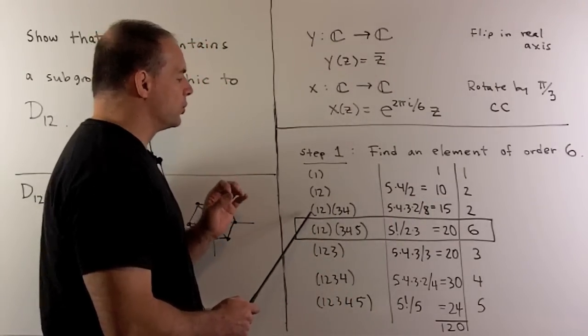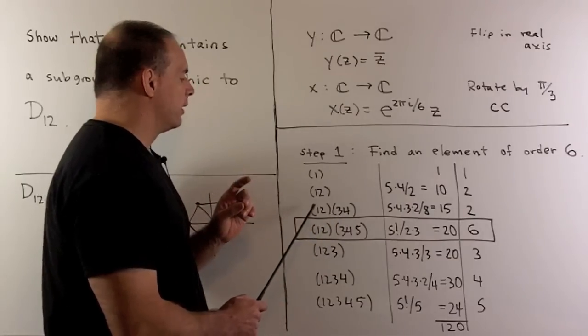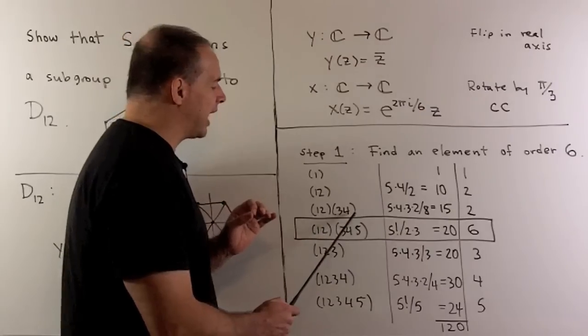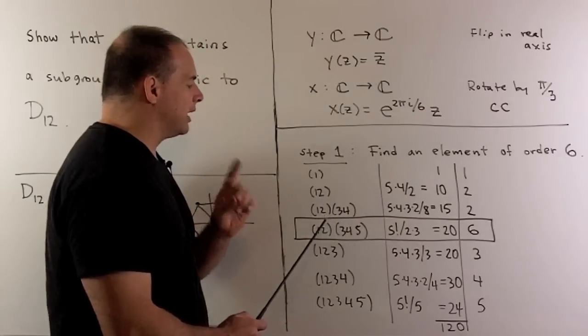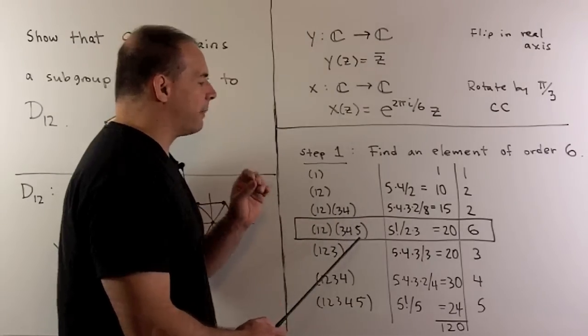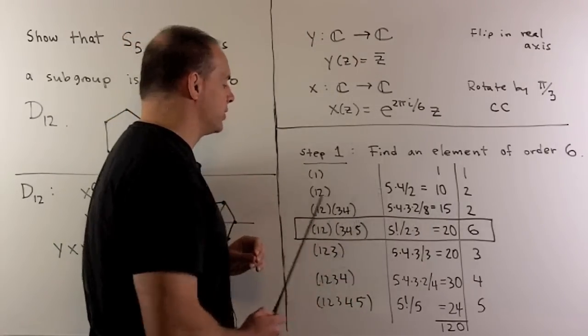For disjoint products of two cycles, we have 5, 4, 3, 2. I divide by two, divide by two again, and then we divide by two again because I can reverse the order of our two cycles. So we divide by eight and we get 15 elements of this type.